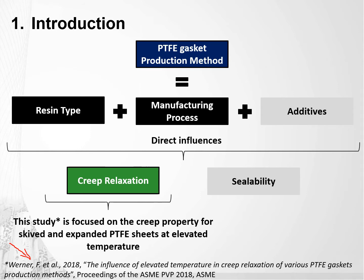There are multiple ways of producing PTFE gaskets. In a very short and simplified manner, you have your inputs — resin, process, additives — that will lead to a product, and this product's performance is directly influenced by your inputs. There are multiple properties that can be evaluated, such as sealability, mechanical resistance, creep, etc. For this study, we chose creep for being such a critical property for PTFE.